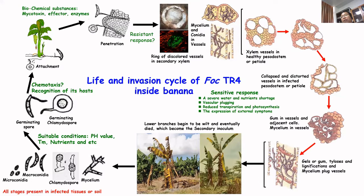Photosynthesis will be reduced. The plant will show external wilting symptoms and eventually be killed by the pathogen. The dead plant and diseased tissues will become the secondary inoculum and begin the second round of infection. That is the whole invasion cycle for the pathogen.